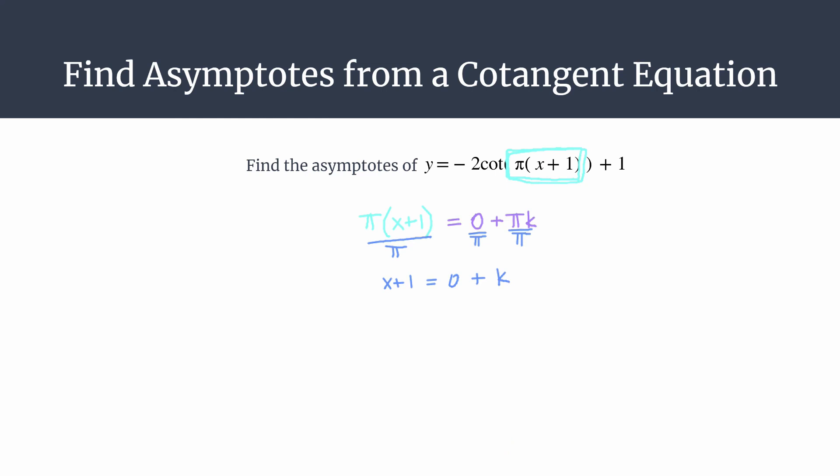Last step, let's subtract 1 from both sides. We can only subtract the 1 from the 0 on the right side, because it's not a like term with that 1k term. So we're going to get an asymptote generating equation that's x equals negative 1 plus k. This equation shows you every single asymptote for the graph. It's a neat way to represent all of them.